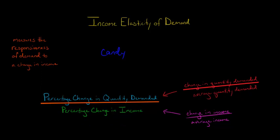For example, if your income were to go up 10% and you had a corresponding percentage change in the quantity demanded of candy of 50%, so your income goes up by 10% and the quantity of candy you're demanding goes up by 50%, then your income elasticity of demand is five.